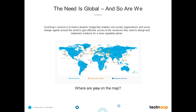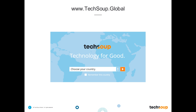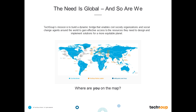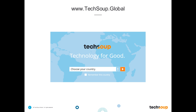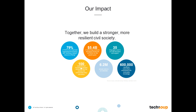TechSoup is headquartered in San Francisco, California. We're a 501(c)(3) nonprofit like many of you joining us today, and we work to empower organizations around the world to help them get the latest tools, skills, and resources to help them achieve their mission. We serve almost every country in the world, and we also have a dedicated website for those from outside of the U.S. We've helped organizations get more than $5 billion in technology products and grants to NGOs around the world, from more than 100 corporate and foundation partners.